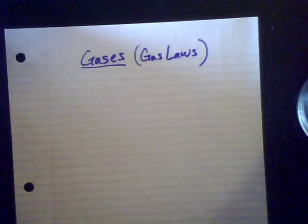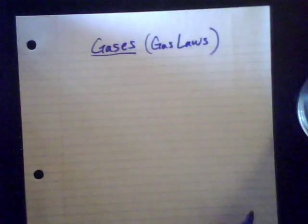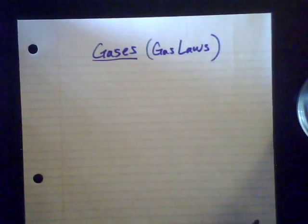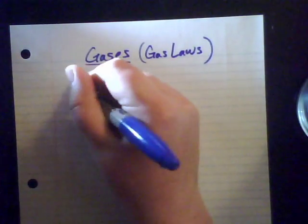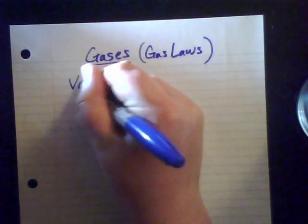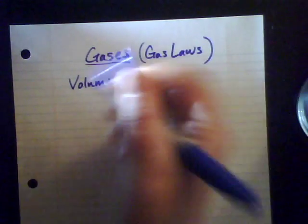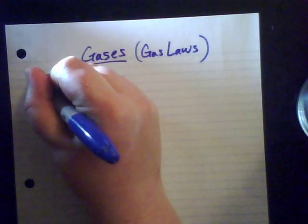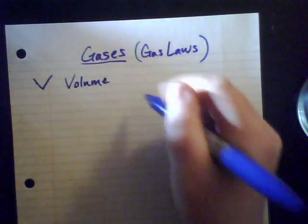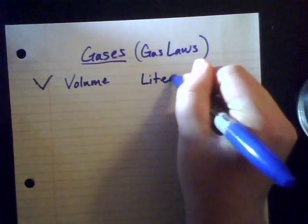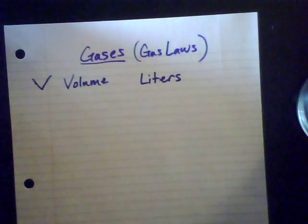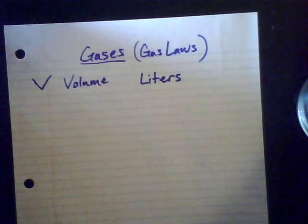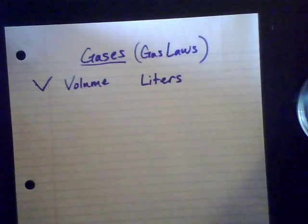There are four major characteristics of gases that we look at, and the first is volume. We'll call it V, and the SI unit for volume is the liter, so we're going to measure our volume in liters or convert it to liters. There's going to be a lot of conversions in these types of problems.